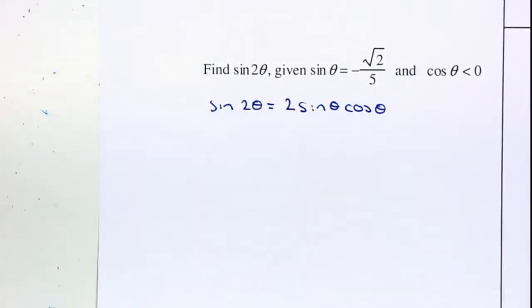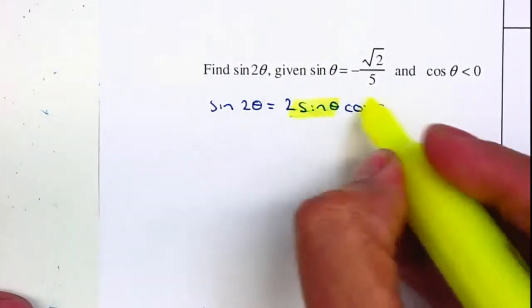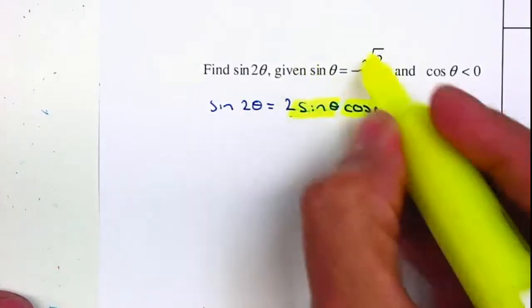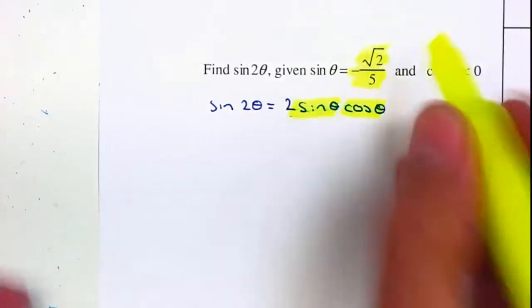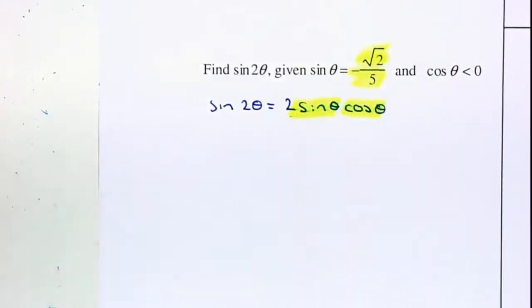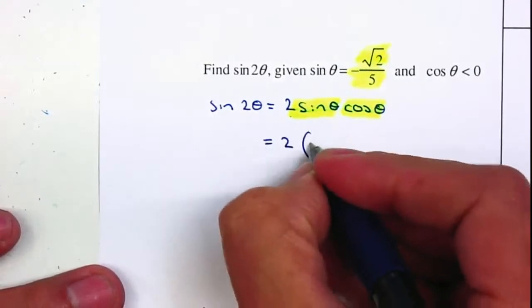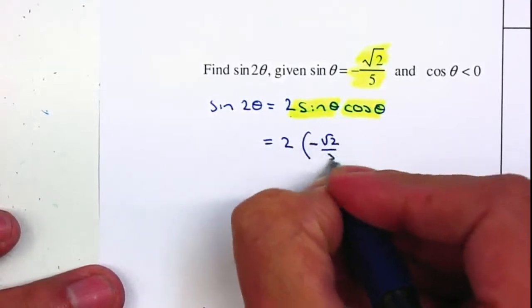Now I just need to substitute the sine of θ and the cosine of θ. Sine of θ is given to me here, so I can substitute it right away. This gives me 2 times negative square root of 2 divided by 5.